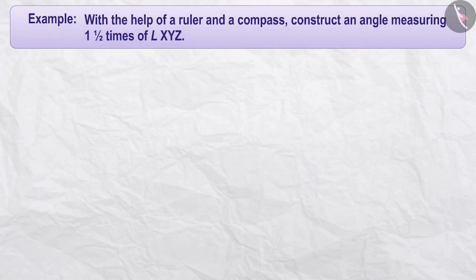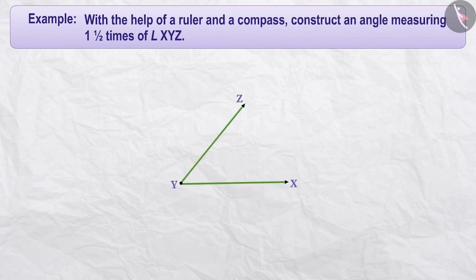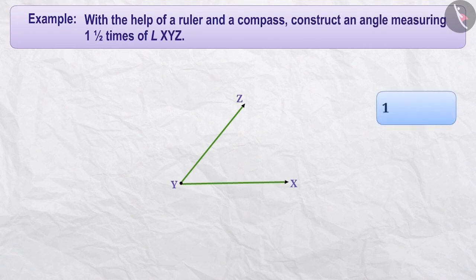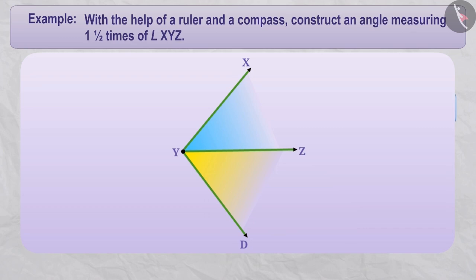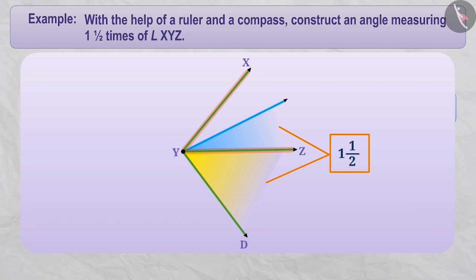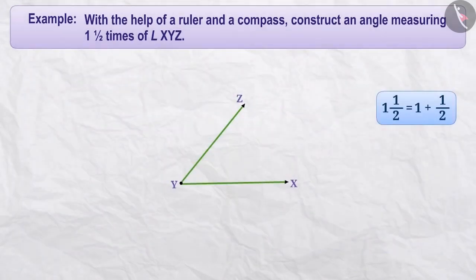Next example: With the help of a ruler and a compass, construct an angle measuring one and a half times angle XYZ. At first this may seem difficult, but with the correct understanding of the composition of an angle, one can easily solve it. Here we have to draw an angle one and a half times larger than the given angle. One and a half means one plus half — if we draw an angle equal to the given angle and then bisect one of them, we get one full angle and one half angle, together forming an angle one and a half times the given angle.